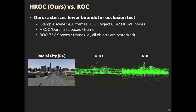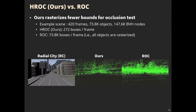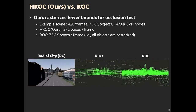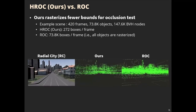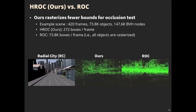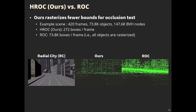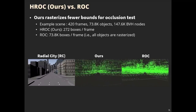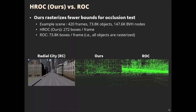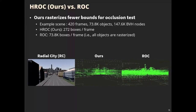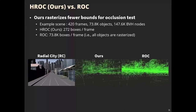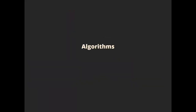This video shows how many bounds of objects HROC and ROC rasterize for the occlusion tests. We can see that HROC rasterizes far fewer bounds compared to ROC, because ROC performs occlusion tests for all objects in every frame. So let's take a look at our culling algorithm.